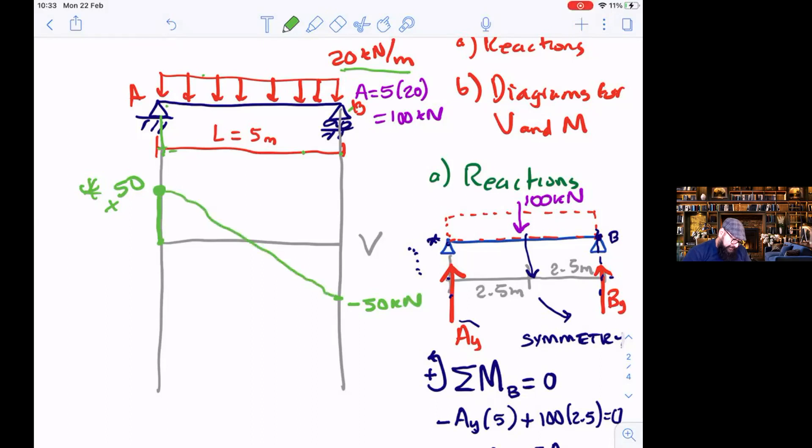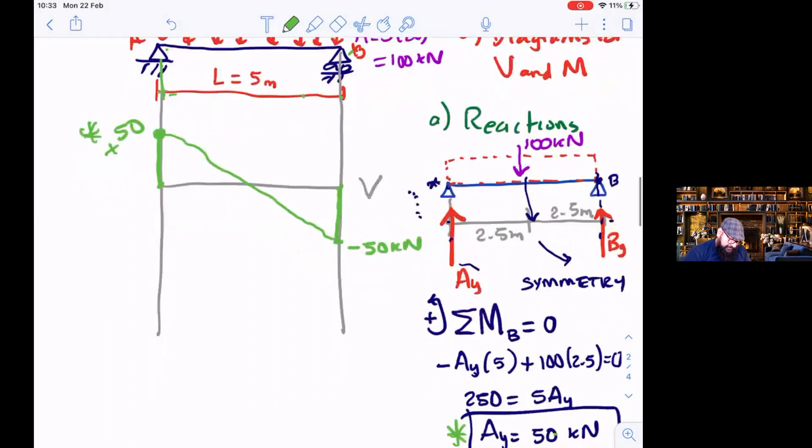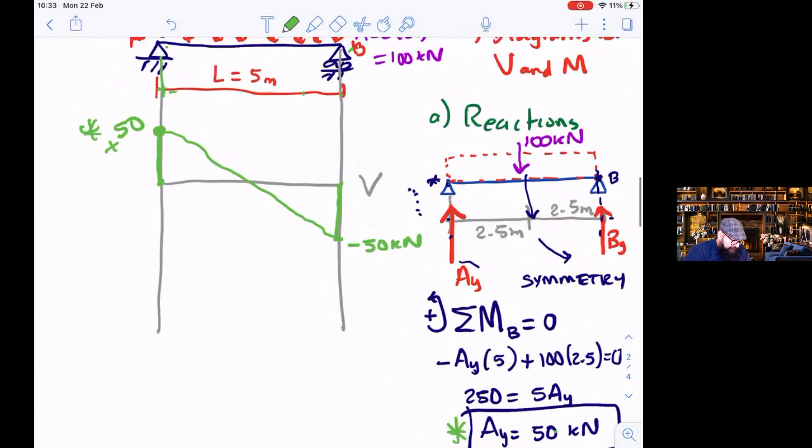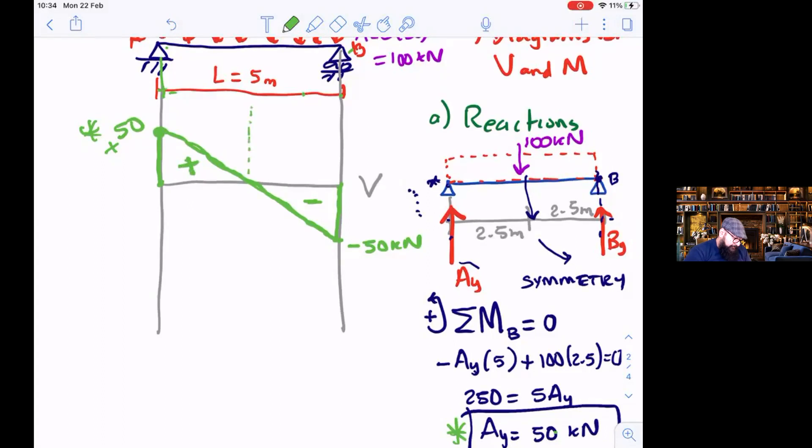But I'm plus 50, and if I go down minus 100, I get to where? To minus 50. Something like that, and then this should be the value of the reaction By, 50. Yes, and this is my shear force diagram. I have a positive area, negative area, and obviously this thing is going to be in the middle. Any questions?